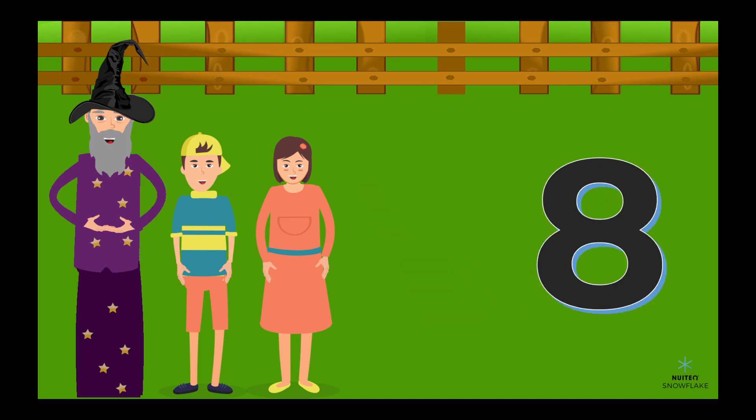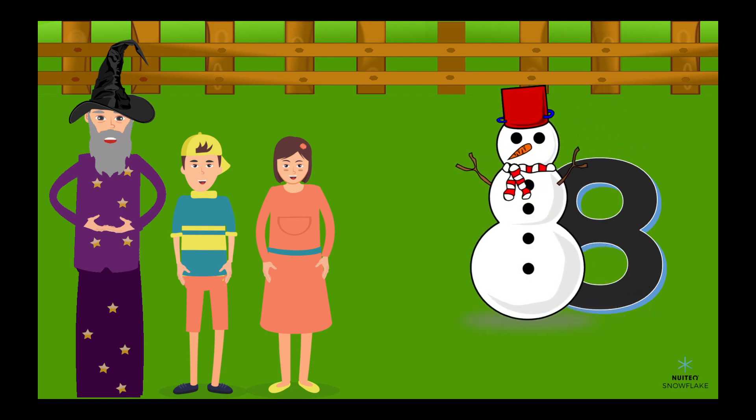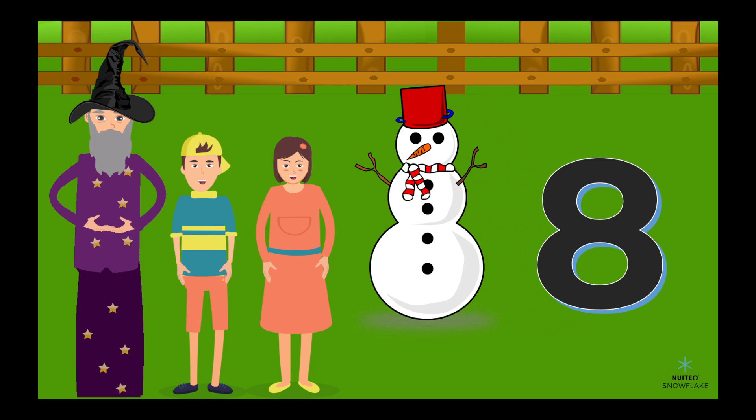Number 8 is easy. It looks like two circles on top of each other. Or a bit like a snowman's body. I wish it would snow, so we could build a number 8 snowman.